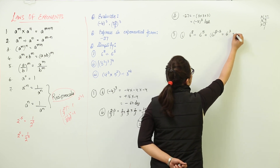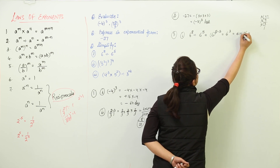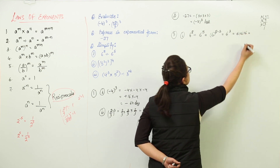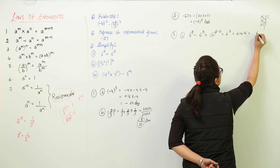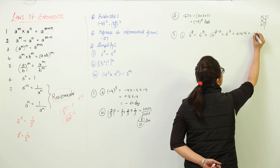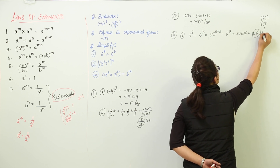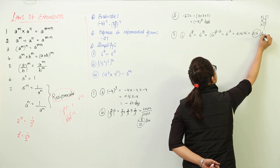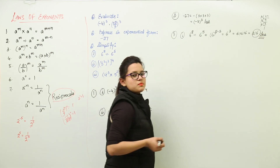You can solve it further as 6 into 6 into 6. 6 sixes are 36, and 36 sixes are 216. So you get 216 as the answer for the first part.